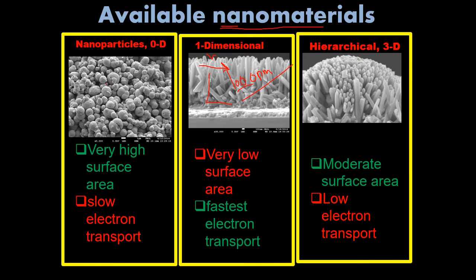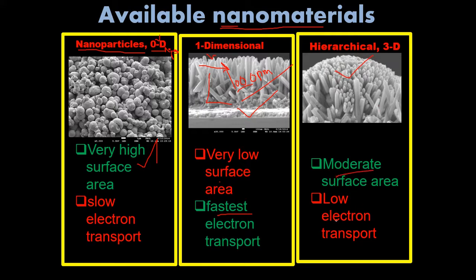Nanostructure materials are divided into many types. Zero dimension is just like a dot — you cannot measure its x-axis, y-axis, or z-axis, which is why it is called zero dimension, such as a nanoparticle. This material has a very high specific surface area but slow electron transport. One dimension has a very low surface area but fast electron transport. The hierarchical structure has a moderate surface area and low electron transport.